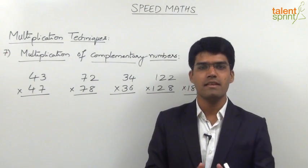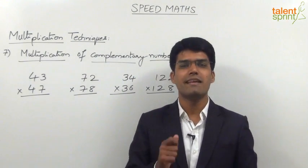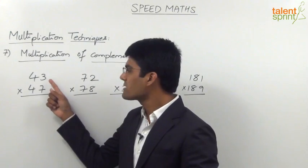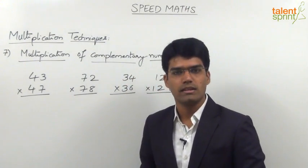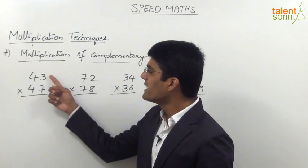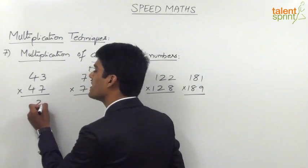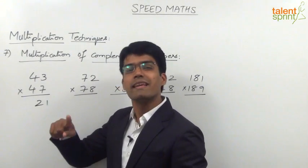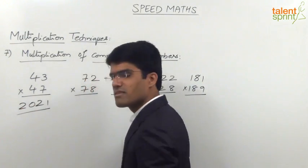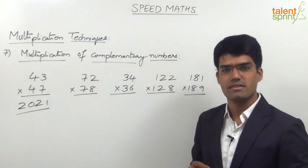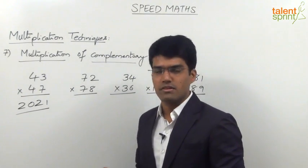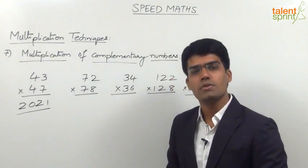As seen previously, we were doing multiplication of two numbers in three steps. But here, multiplication can be done directly in two very simple steps. The first step is to multiply the unit places — 3 into 7 is 21 — and when the numbers are complementary, we write 21 directly in the answer. The next step is to take the remaining part of the number, which is 4, and multiply it by the next higher whole number, which is 5. So 4 into 5 is 20, and that 20 is the remaining part of the answer. So the answer for 43 into 47 is 2021.